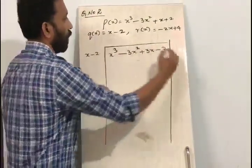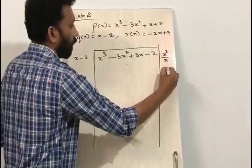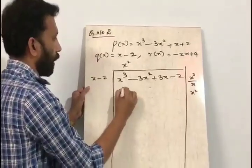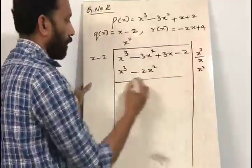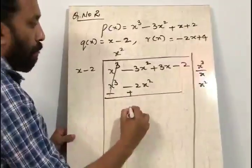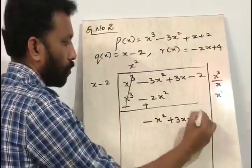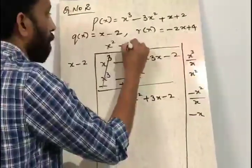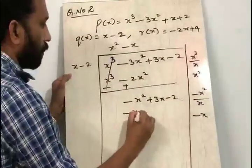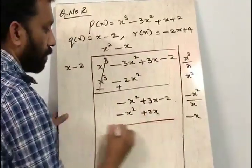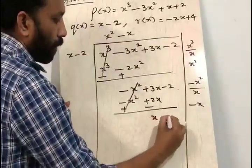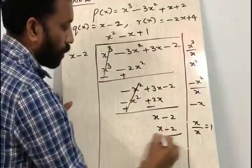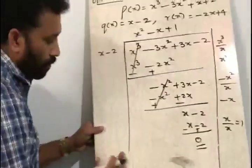Now we divide x cubed minus 3x squared plus 3x minus 2 by x minus 2. To get the first term, x cubed divided by x gives x squared. Then x squared multiplied by x minus 2 gives x cubed minus 2x squared. We change the sign to minus plus, leaving minus x squared plus 3x minus 2. The highest degree term is minus x squared divided by x, giving minus x. Minus x into x minus 2 gives minus x squared plus 2x. After subtracting, the remaining term is x minus 2, and x divided by x gives 1. Then 1 into x minus 2 gives x minus 2, so the remainder is 0.